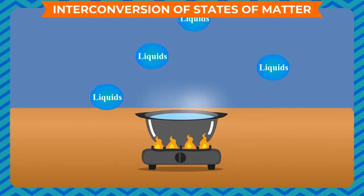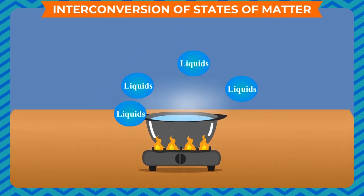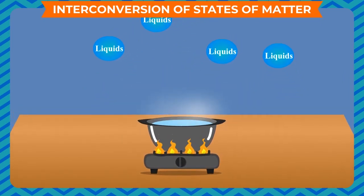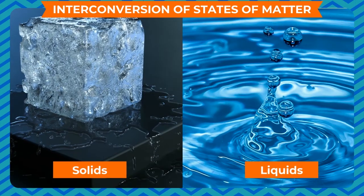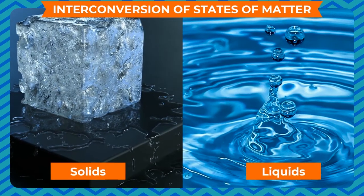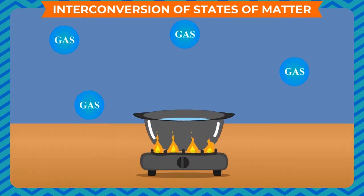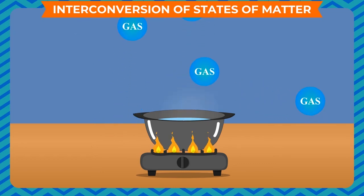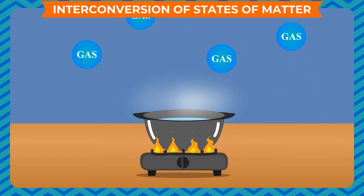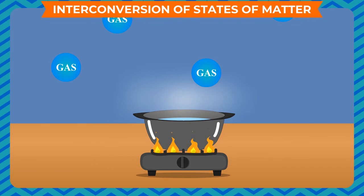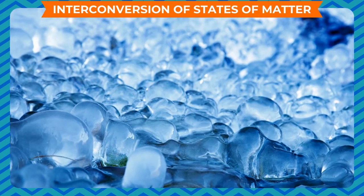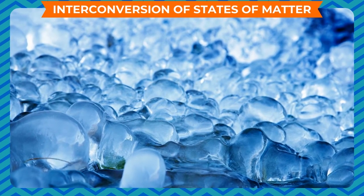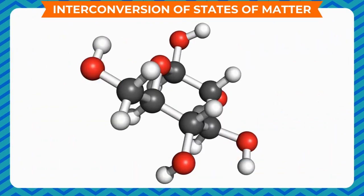When a solid is heated, its molecules gain energy and the intermolecular force of attraction between them diminishes, allowing molecules to move freely — and the solid converts into a liquid. On further heating, molecules become free to move throughout the space and convert into gas. Any change in state changes the arrangement of molecules in that material.